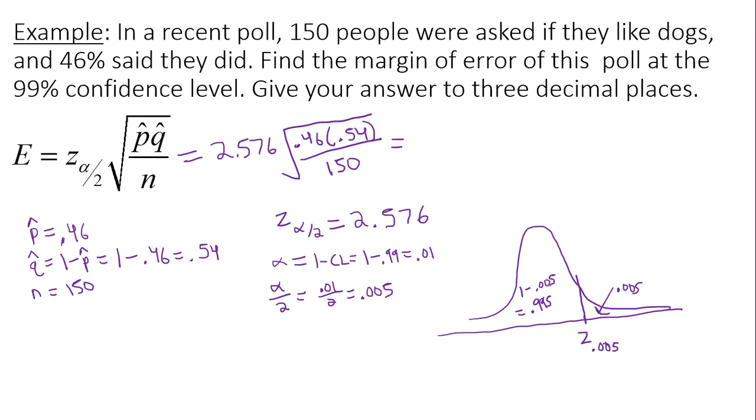You will want to use a calculator to evaluate this. So I have about 2.576 times, underneath the radical, you should get approximately 0.04069. It's probably wise to calculate your radical first. Keep this answer in your calculator, and then multiply by 2.576. This is going to give you 0.105. My error bound, or margin of error, is 0.105.